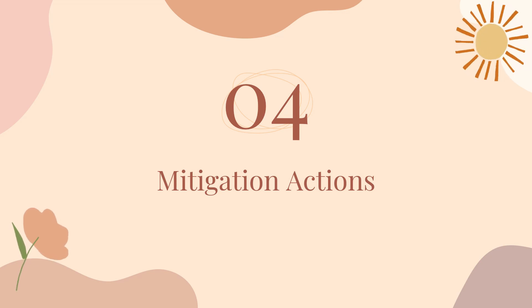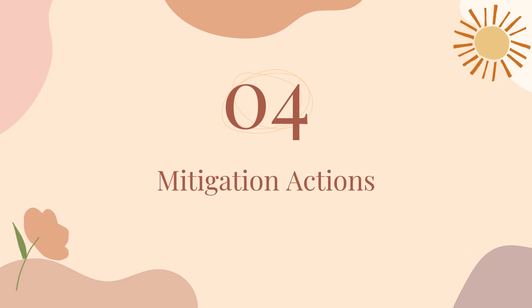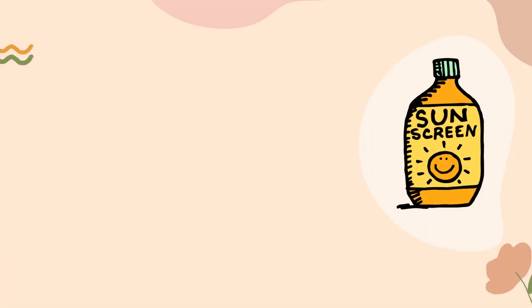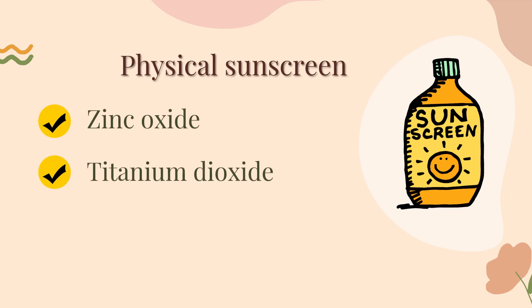Don't worry — we still have a chance to make things right. Instead of buying chemical sunscreen that could harm the environment, it is better to choose physical sunscreen with mineral-based and environmentally friendly ingredients. If you wonder how to choose the right ingredient, flip the bottle over and check the active ingredients label for zinc oxide and titanium dioxide. It's simple.